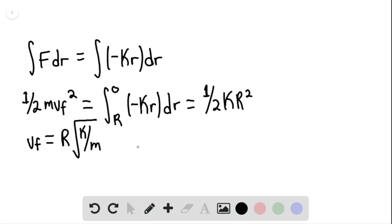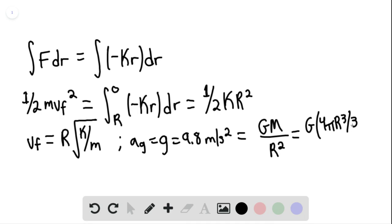We note that the acceleration of gravity, a sub g, is going to be equal to g, which would be 9.8 meters per second squared. And we can then say that a sub g would also be equal to gm over r squared. Or we can say g times 4 pi r cubed divided by 3 times rho, the density of earth, divided by r squared.